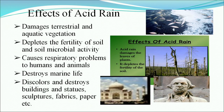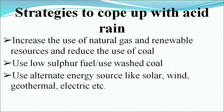Effects of acid rain: it damages terrestrial and aquatic vegetation, depletes soil fertility and soil microbe activity, causes respiratory problems, destroys marine life, and discolors or destroys buildings, statues, and sculptures. Strategies to cope with acid rain: increase use of natural gas and renewable resources, reduce use of coal, use low-sulphur fuel, use washed coal, or use alternative energy sources like solar, wind, or geothermal energy.